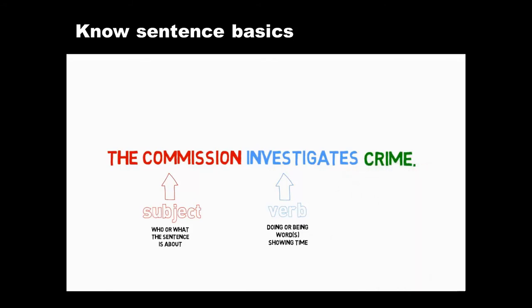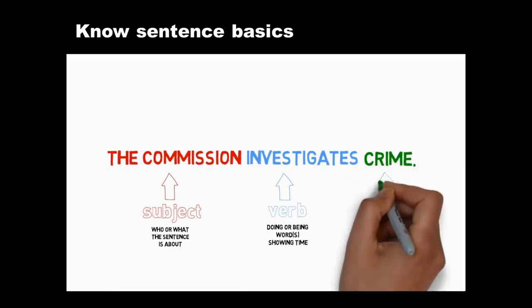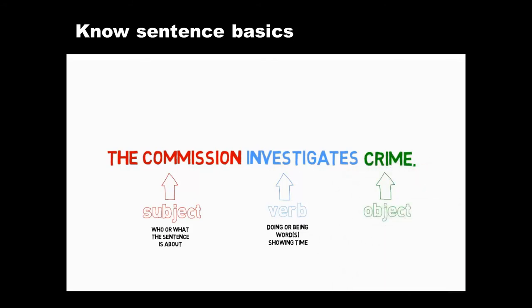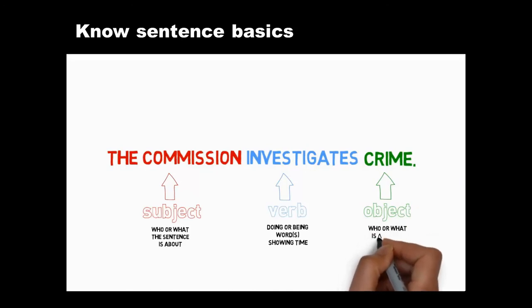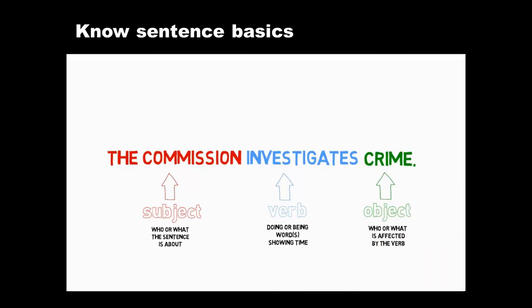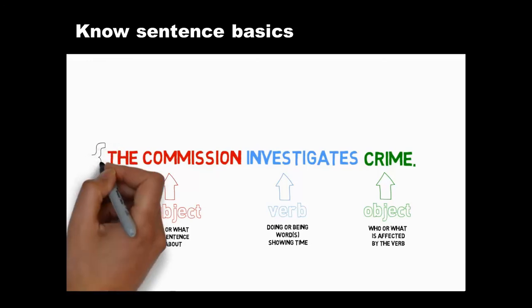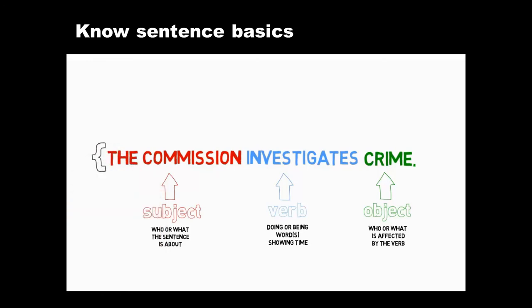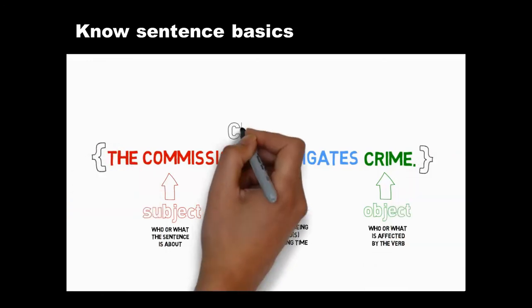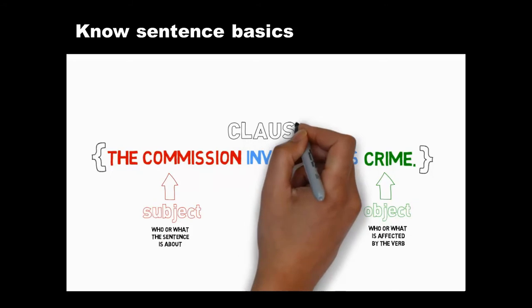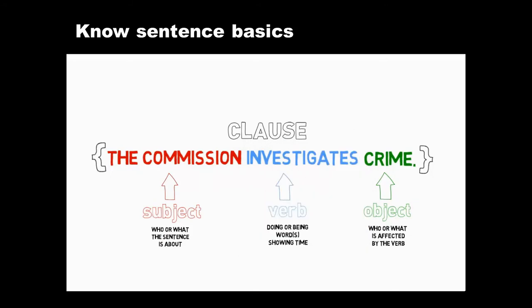And third, if you need one, place an object straight after the verb. Objects tell readers who or what the verb is affecting. Keep these three elements close together and choose strong, dynamic, active verbs where you can. These three elements make an independent clause, which can form a simple sentence.